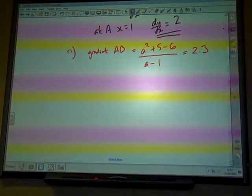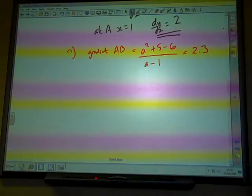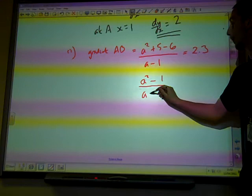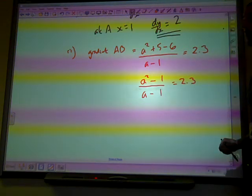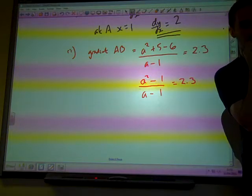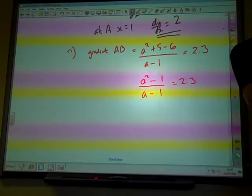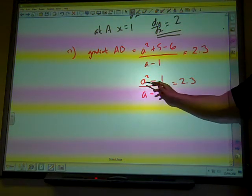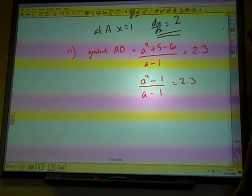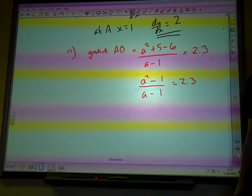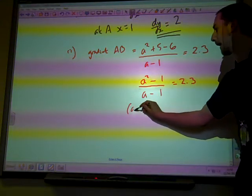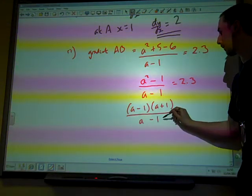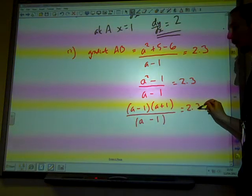That looks a bit of a mess. We've got (a² - 1)/(a - 1) = 2.3. What have we got? We've got a² - 1. That factorizes, doesn't it? a² - 1 is the difference of two squares. That's (a - 1)(a + 1) over (a - 1), equals 2.3.